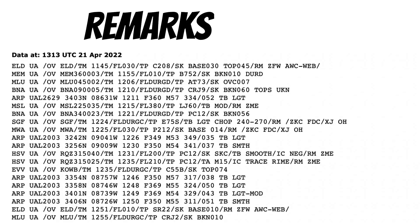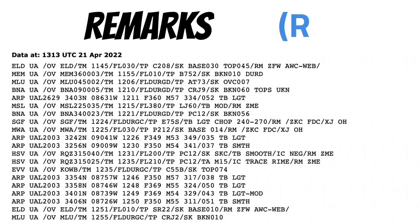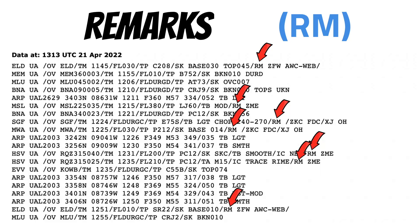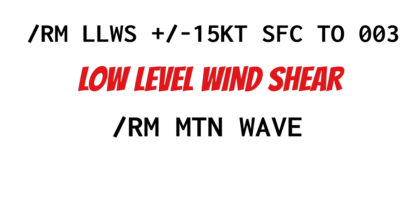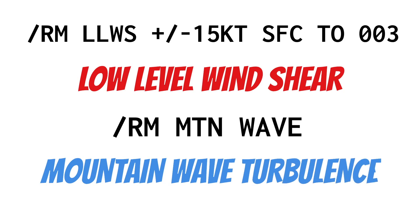Remarks at the end of a PIREP are indicated by RM. One of the main things to look for is information on hazardous weather — for example, LLWS plus or minus 15 knots surface to 300 feet, which stands for low-level wind shear. That can be scary if you don't know it's there. You may also see notes about mountain wave turbulence or braking action on the runway.